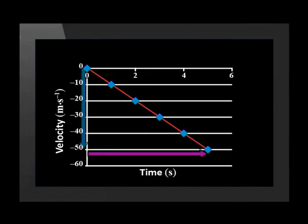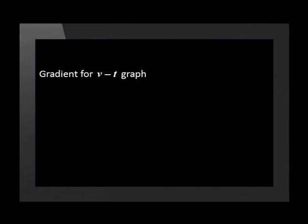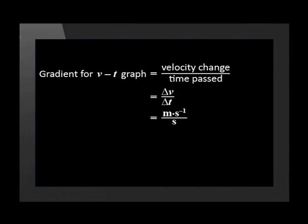Remember that gradient means delta y over delta x. For a vt graph, delta y is velocity change and delta x is time passed. In other words, delta v divided by delta t. So in units, the gradient is meters per second per second, or meters per second squared. This is the unit for acceleration. This is not surprising because acceleration is the rate of change of velocity. So the gradient of the graph tells us the ball's acceleration.